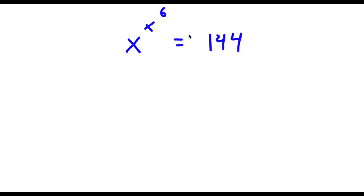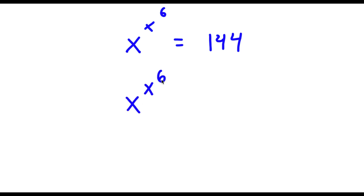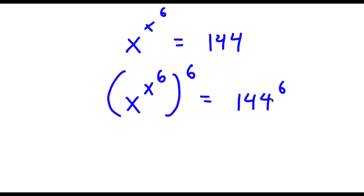So I have x to the power of x to the power of 6 is equal to 144. The first thing I'm going to do is take the power of 6 on both sides. So now I have x to the power of x to the power of 6 to the power of 6 is equal to 144 to the power of 6.